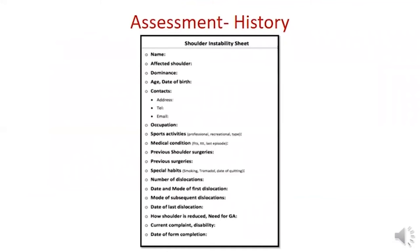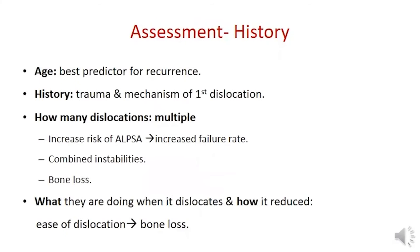When evaluating the patient with instability, it is critical to obtain an accurate history. Key questions include: history of trauma and the mechanism of the first dislocation; how many dislocations have occurred, as multiple dislocations indicate increased risk of ALPSA, combined instabilities, and bone loss; what the patient was doing when it dislocated and how it was reduced. Ease of dislocation suggests bone loss.